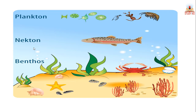There are five groups of aquatic organisms: neuston, periphyton, plankton, nekton, and benthos. Let's first understand what plankton are.